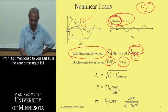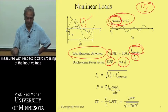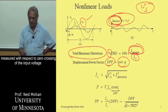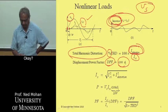Where phi1, as I mentioned to you earlier, is the zero crossing of IS1 measured with respect to zero crossing of the input voltage, VS here. Between this and this over here.